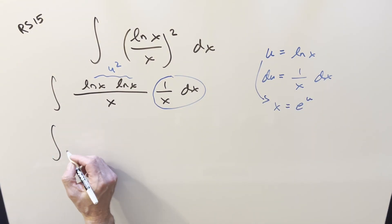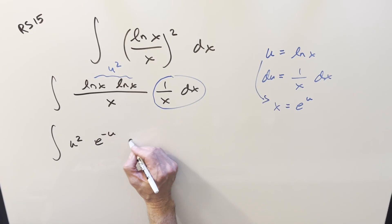So then go ahead and substitute. We'll start with the numerator. That's going to be just u squared. Now I'm going to take this and bring it into the numerator. So instead of having e to the u, this becomes e to the minus u, and then all this is our du.